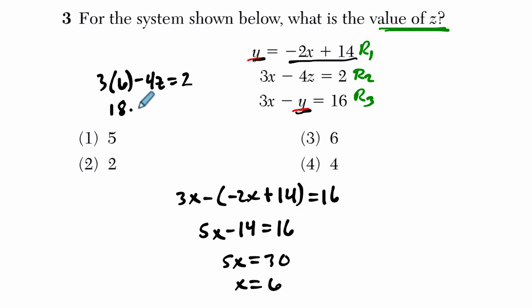3 times 6 minus 4z is 2. And that means 18 minus 4z is 2. And I'm going to subtract 18 from both sides. Negative 4z is negative 16. And divide by negative 4 and I get 4. That's the value of z. Alright, hope that helps.